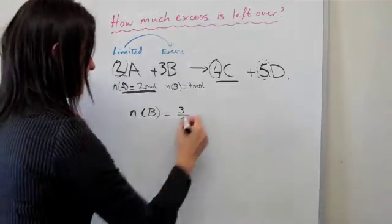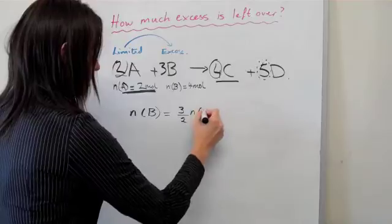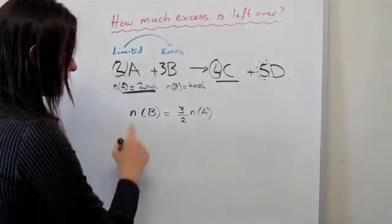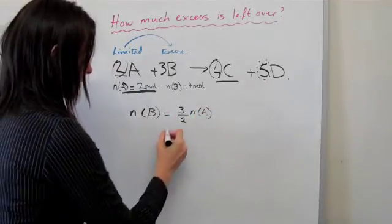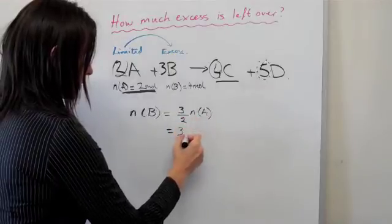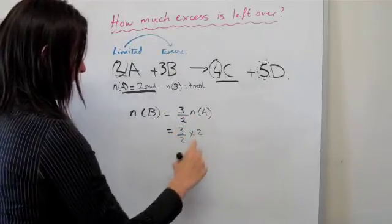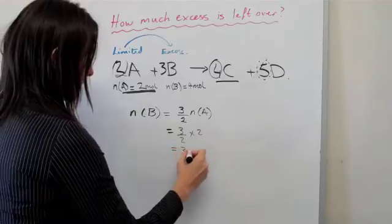That's basically what we need to calculate. We need to go 3 over 2 times 2 mole of A, and then we get 3 mole.